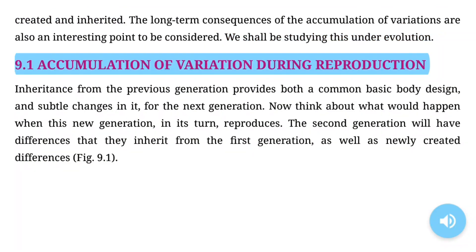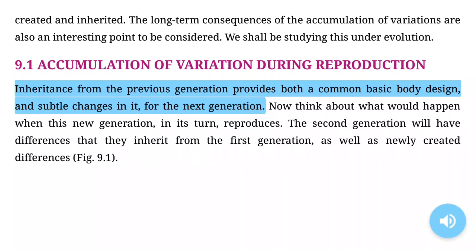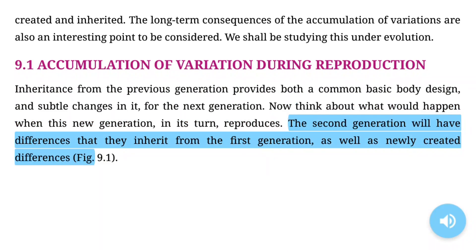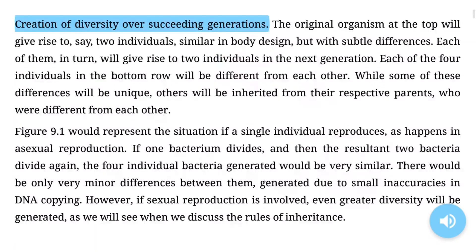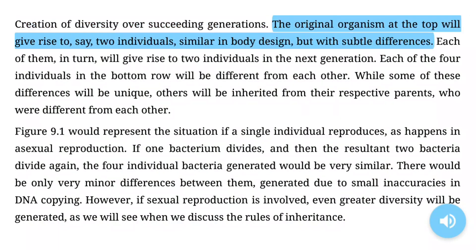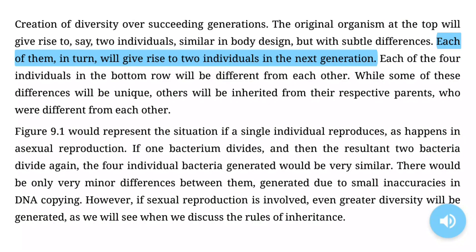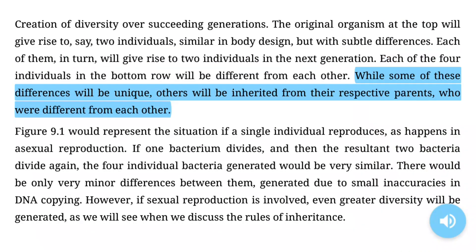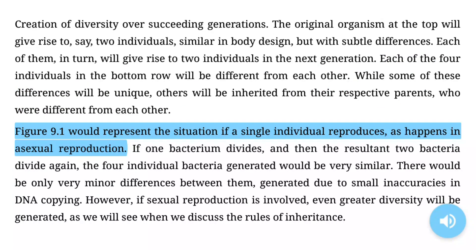9.1 Accumulation of variation during reproduction. Inheritance from the previous generation provides both a common basic body design and subtle changes in it for the next generation. When this new generation reproduces, the second generation will have differences inherited from the first generation, as well as newly created differences. The original organism at the top of Figure 9.1 will give rise to two individuals, similar in body design but with subtle differences. Each of them will give rise to two individuals in the next generation. The four individuals in the bottom row will each be different from one another — some differences unique, others inherited from their respective parents.